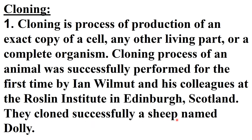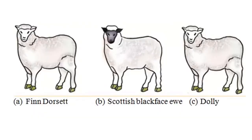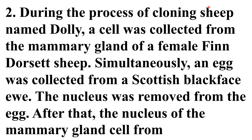They successfully cloned a sheep named Dolly — the first cloned mammal. During the process, a cell was collected from the mammary gland of a female Finn Dorset sheep. Simultaneously, an egg was collected from a Scottish Blackface ewe, and the nucleus was removed from that egg.